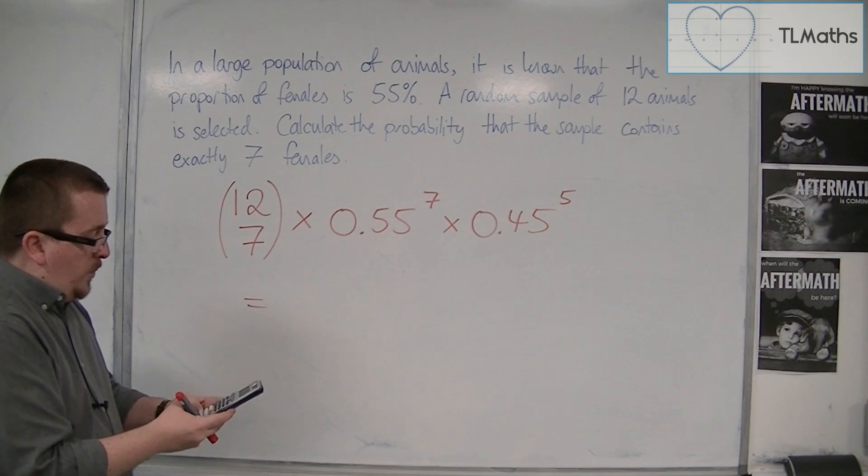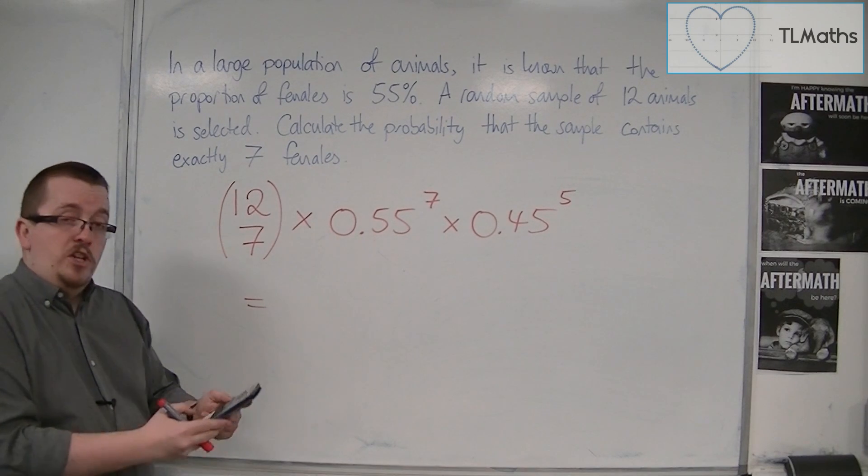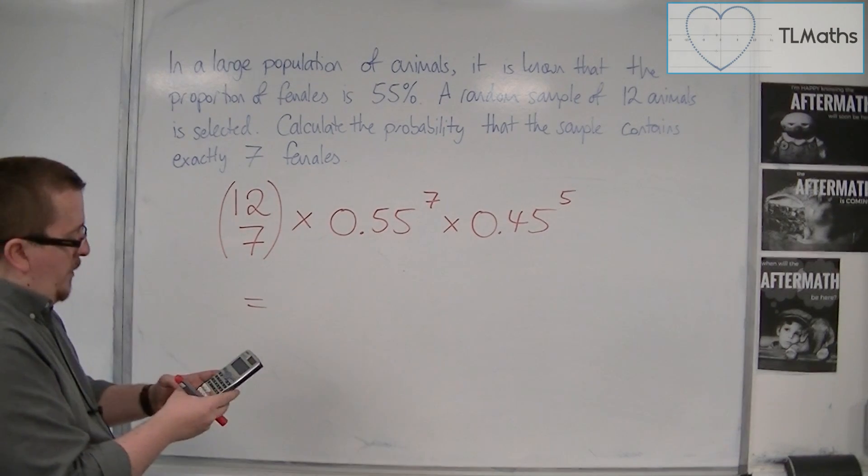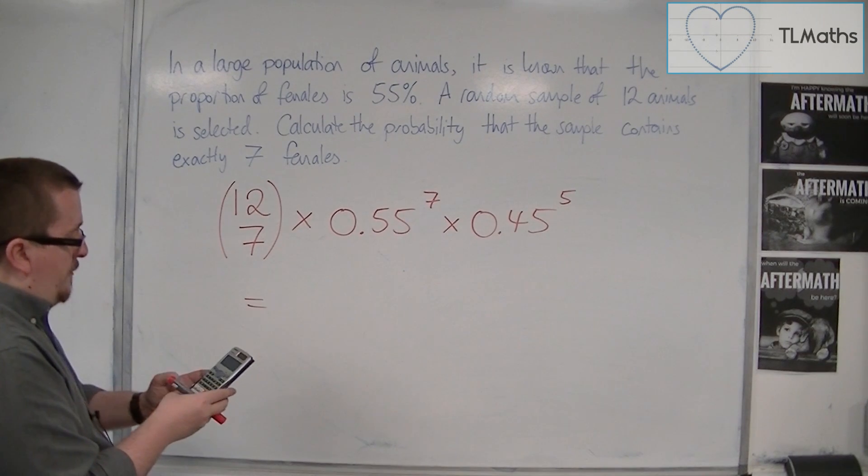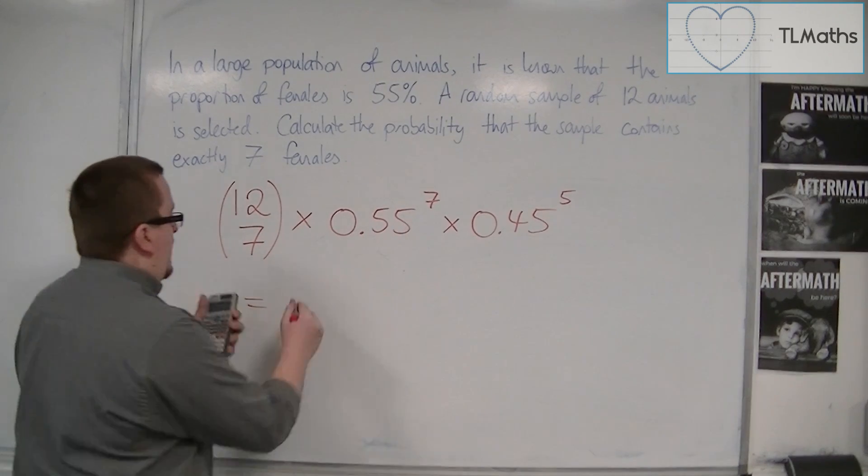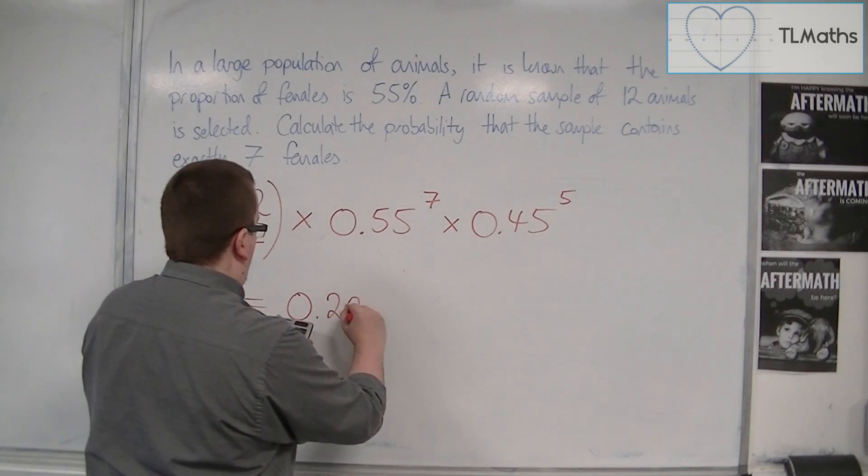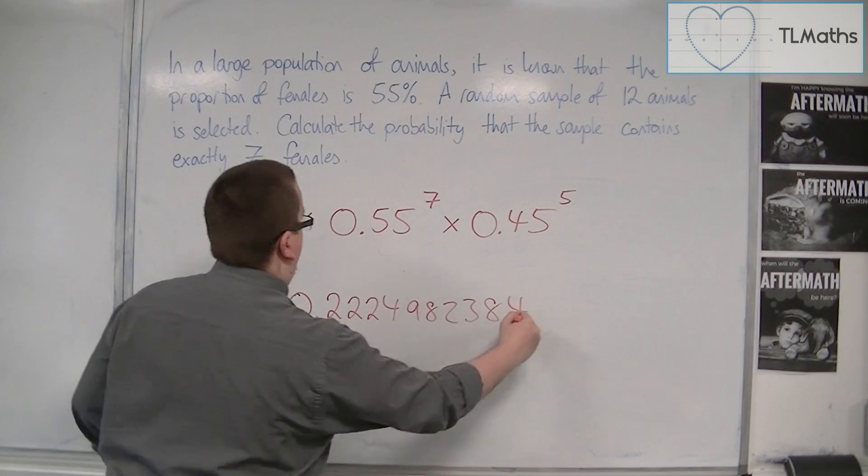So we get 12 NCR 7, which is 792, times 0.55 to the power of 7, and then times 0.45 to the power of 5. And we get 0.2224982384.